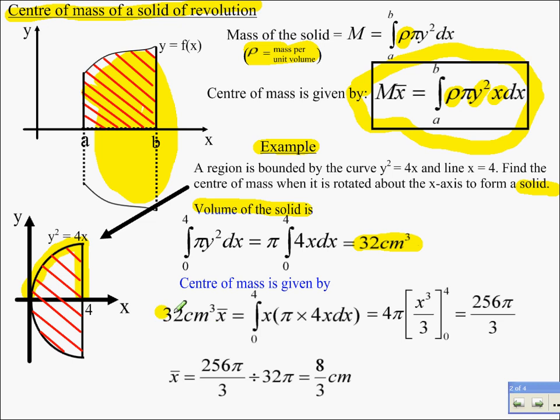The center of mass is going to be that 32 centimeters cubed times x bar is equal to, and the formula up here, pi y squared x dx. So pi y squared is 4x times x, all with respect to x. So integrate that, you get x cubed over 3, put limits of 4 and 0 in and you get 256 pi over 3. So we know 32 centimeters cubed times x bar is equal to 256 pi over 3. So obviously we get 256 pi over 3 divided by 32.